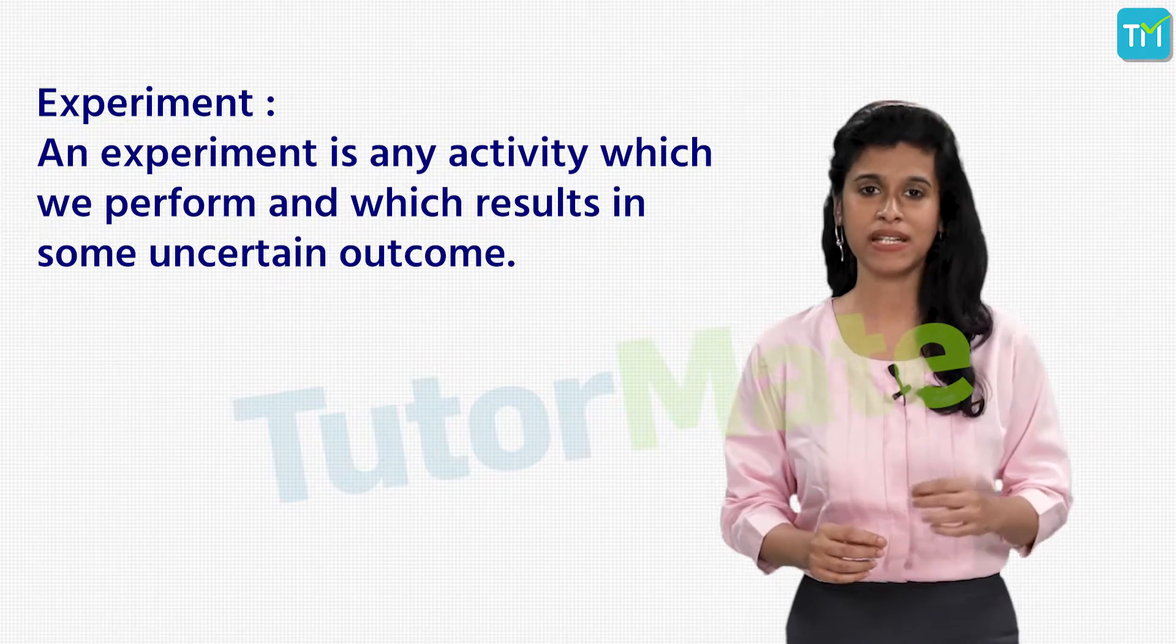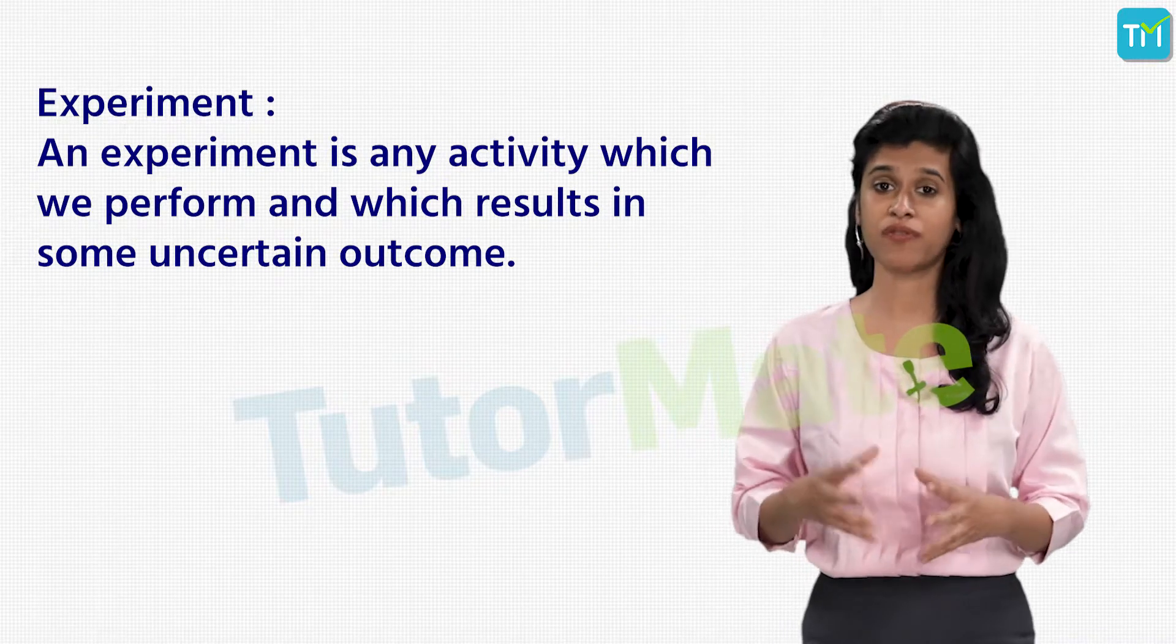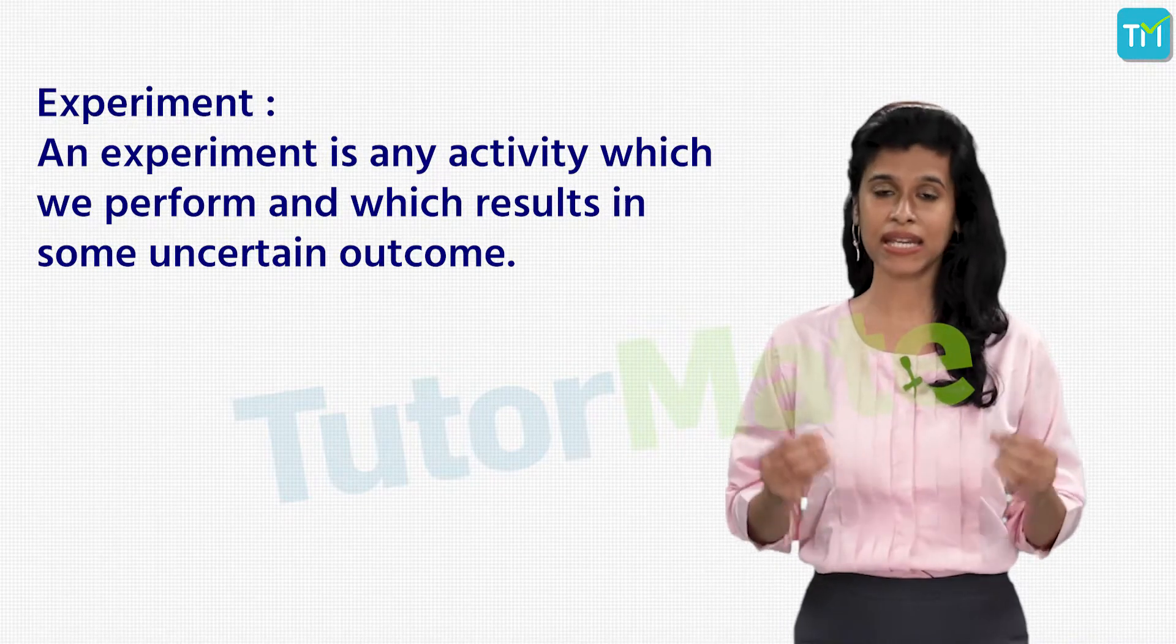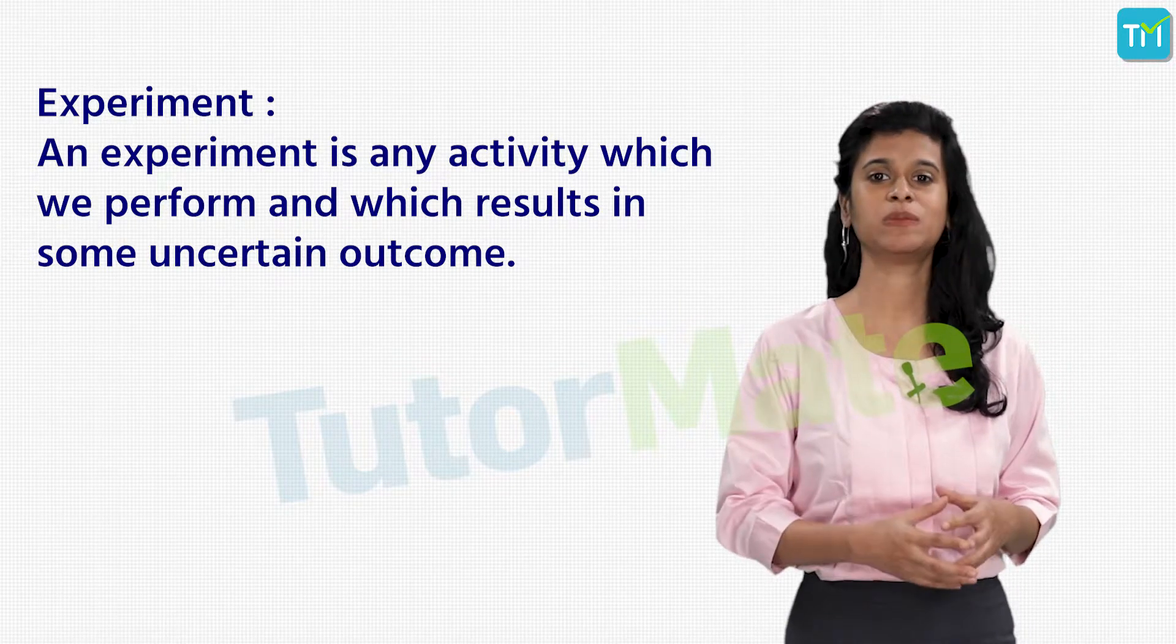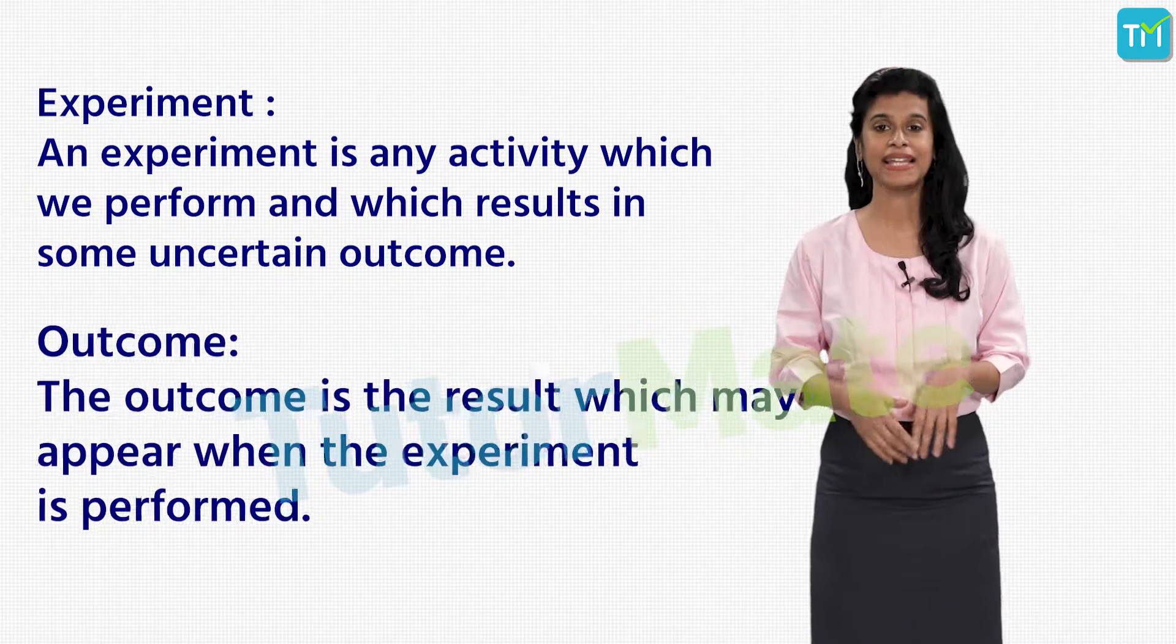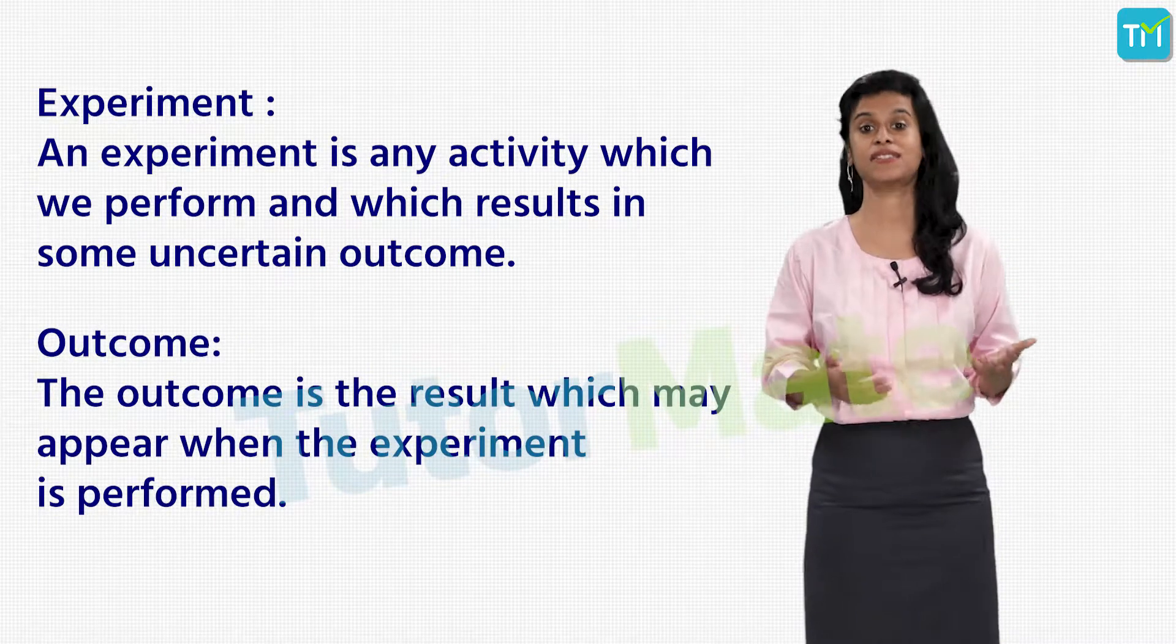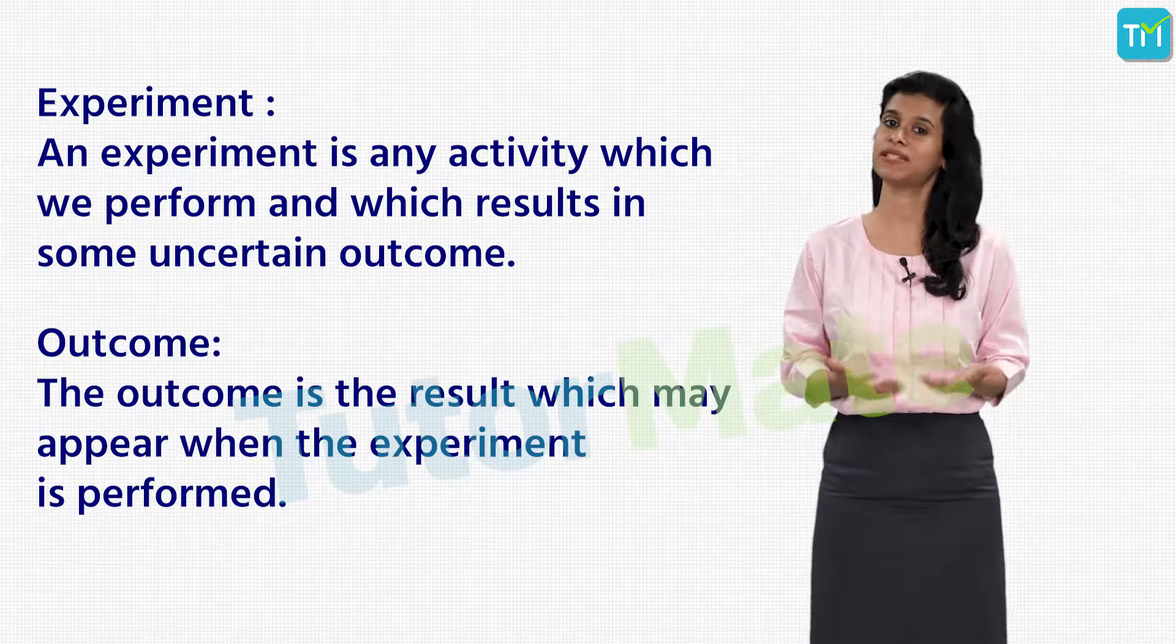Before we define probability, we first need to learn the terms that are used to define probability. Our first term is experiment. By definition, an experiment is any activity which we perform and which results in some uncertain outcome. The second term is the outcome, defined as a result that appears when the experiment is performed.